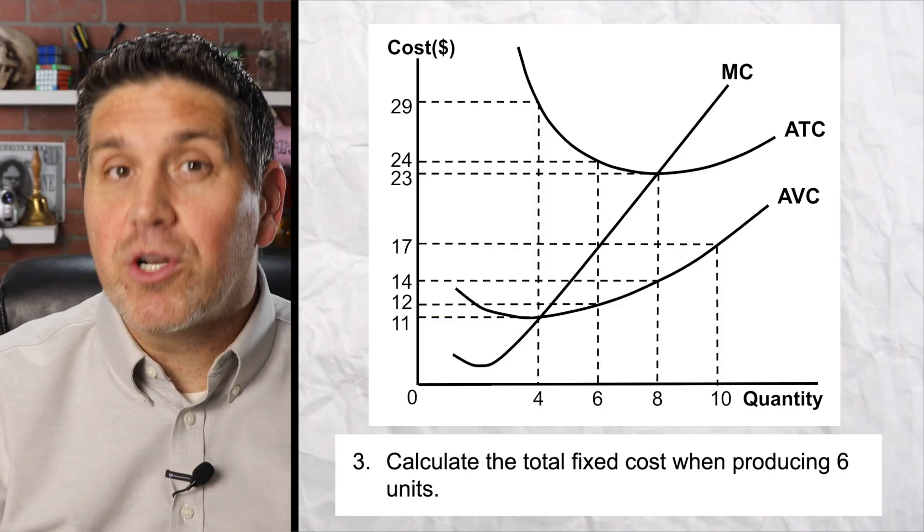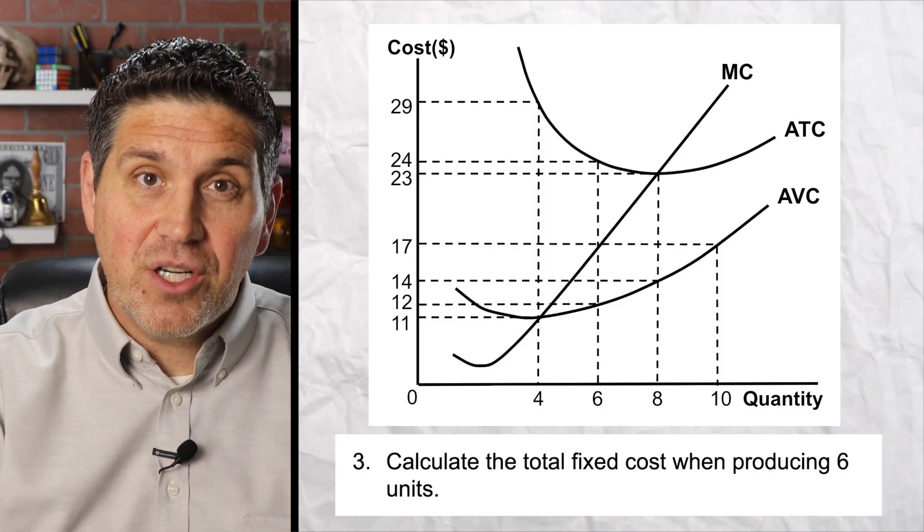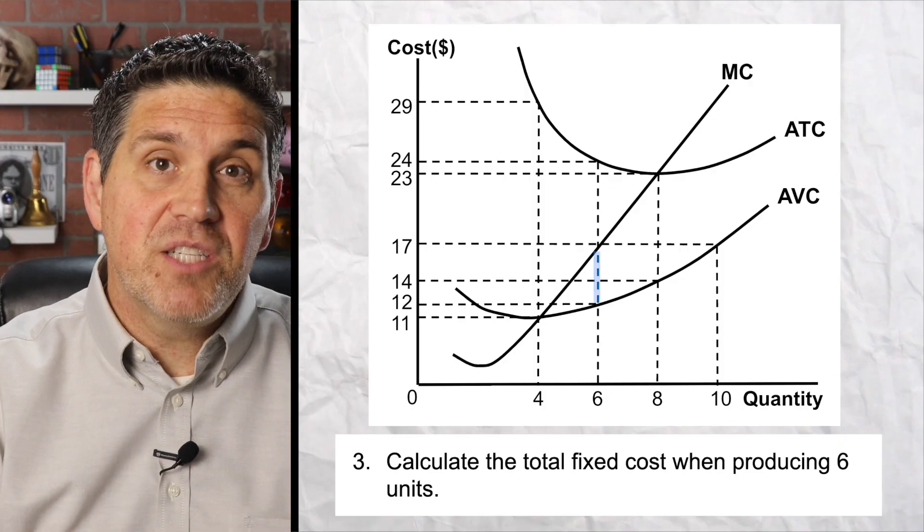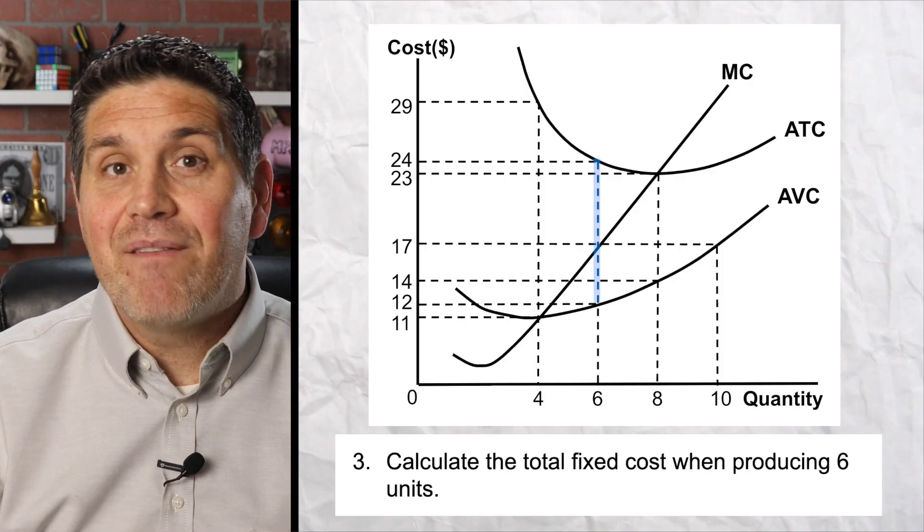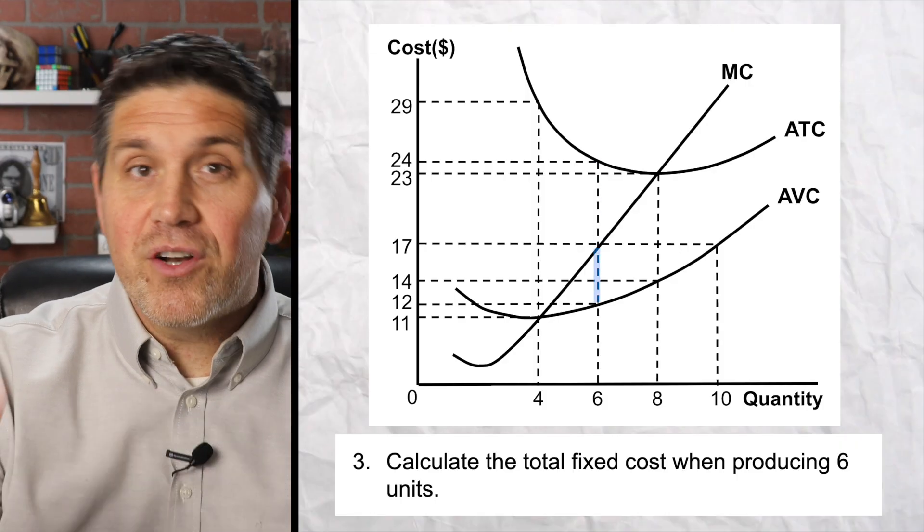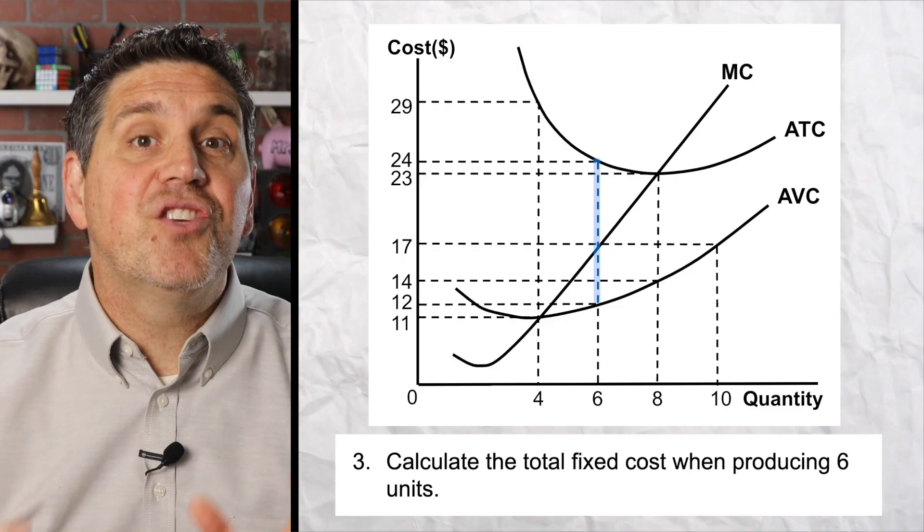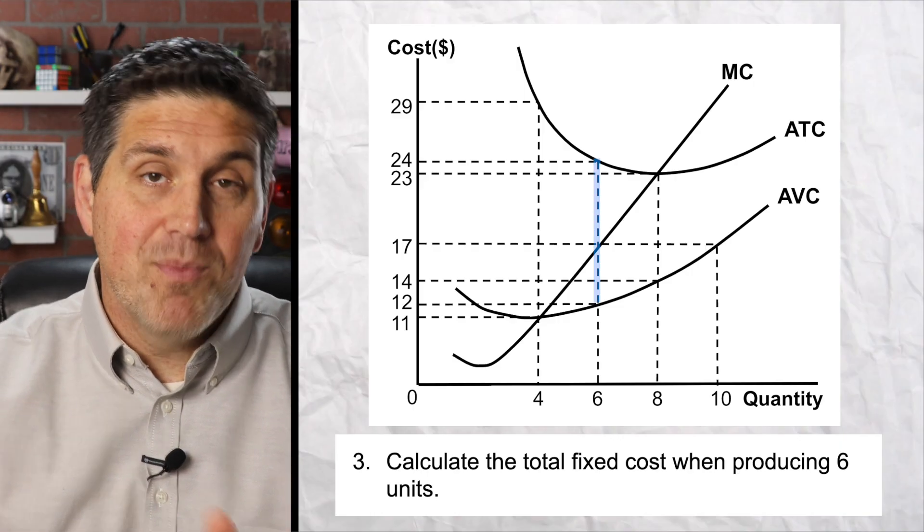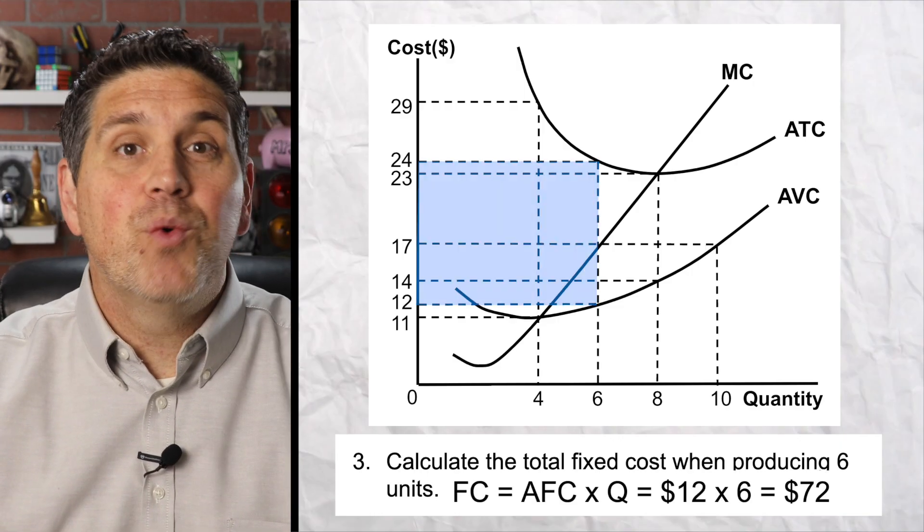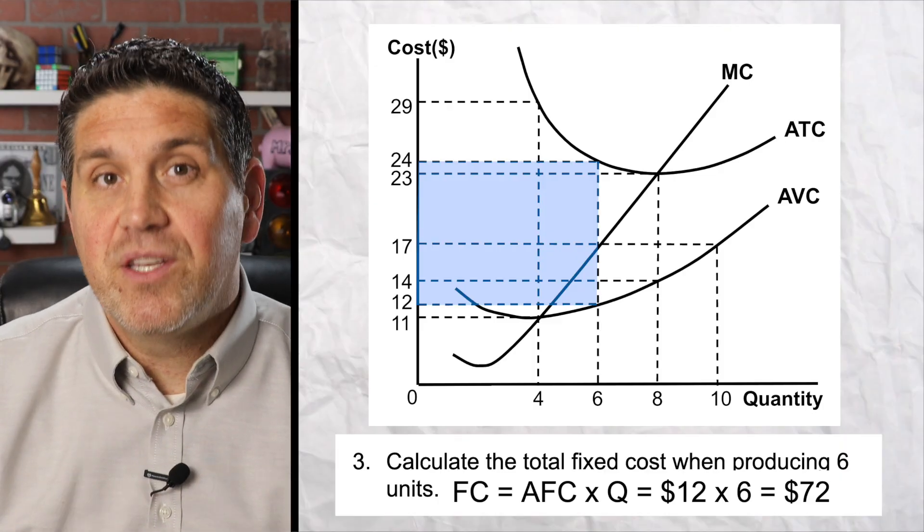Question three is a little bit more tricky because you don't have an average fixed cost curve, but remember the vertical distance between the average total cost and the average variable cost is the average fixed cost. So $24 minus $12 gives you an average fixed cost of $12. You multiply that times six and that gives you a total fixed cost of 72.